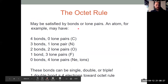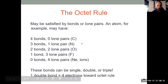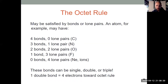Oxygen has two bonds and two lone pairs. Fluorine has one bond and three lone pairs. Noble gases have no bonds and four lone pairs. Each of these combinations gives eight electrons total. We can also have double bonds, which count for four electrons, and triple bonds, which count for six electrons. Those bonds are still shared between the atoms.